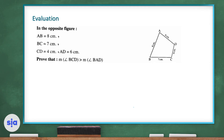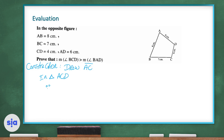Now let's move on to the evaluation part. In the opposite figure, AB equals 8 cm, BC equals 7 cm, CD equals 4 cm, and AD equals 6 cm. We need to prove that the measure of angle BCD is greater than the measure of angle BAD. We will make a construction by drawing segment AC.